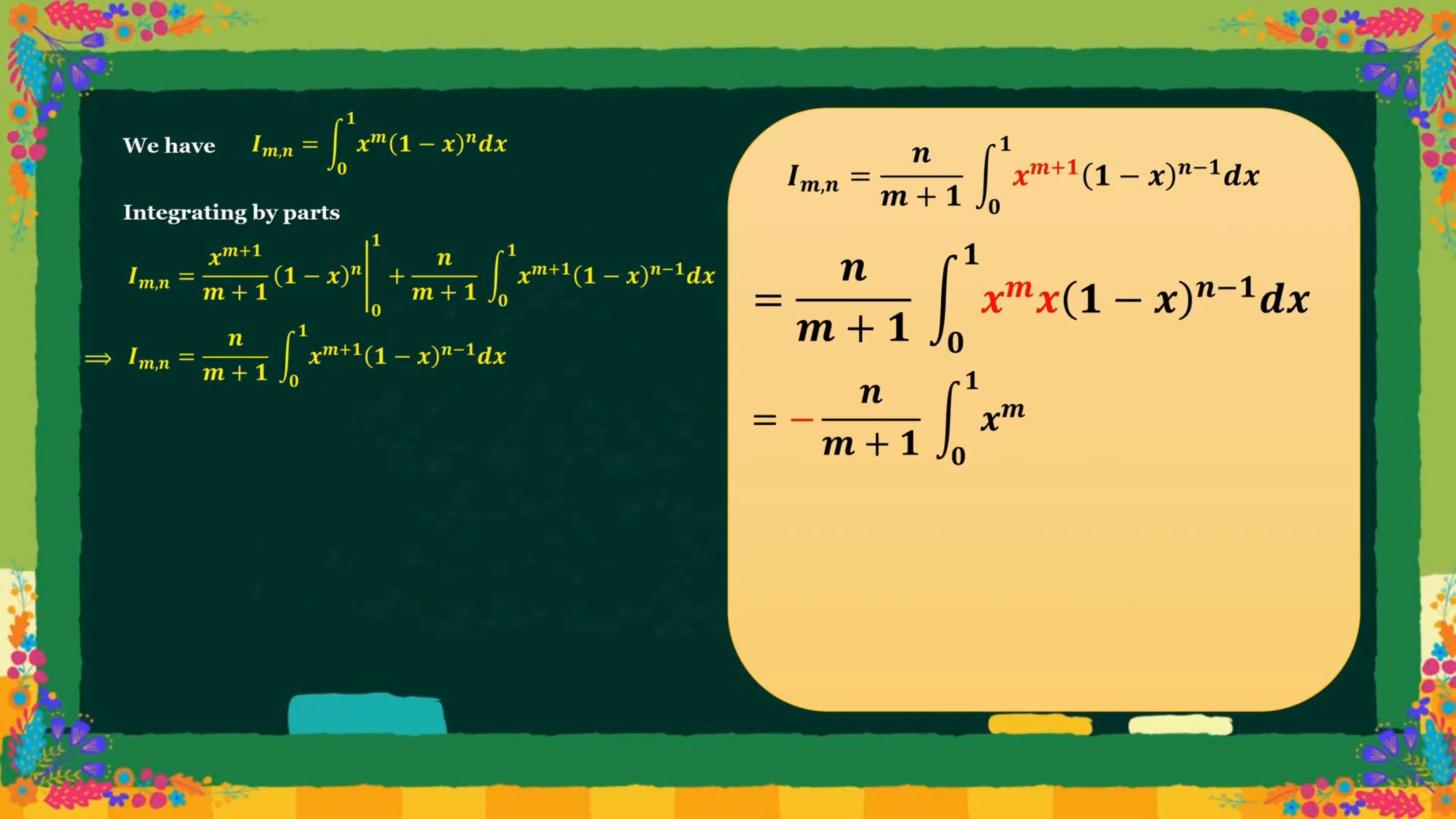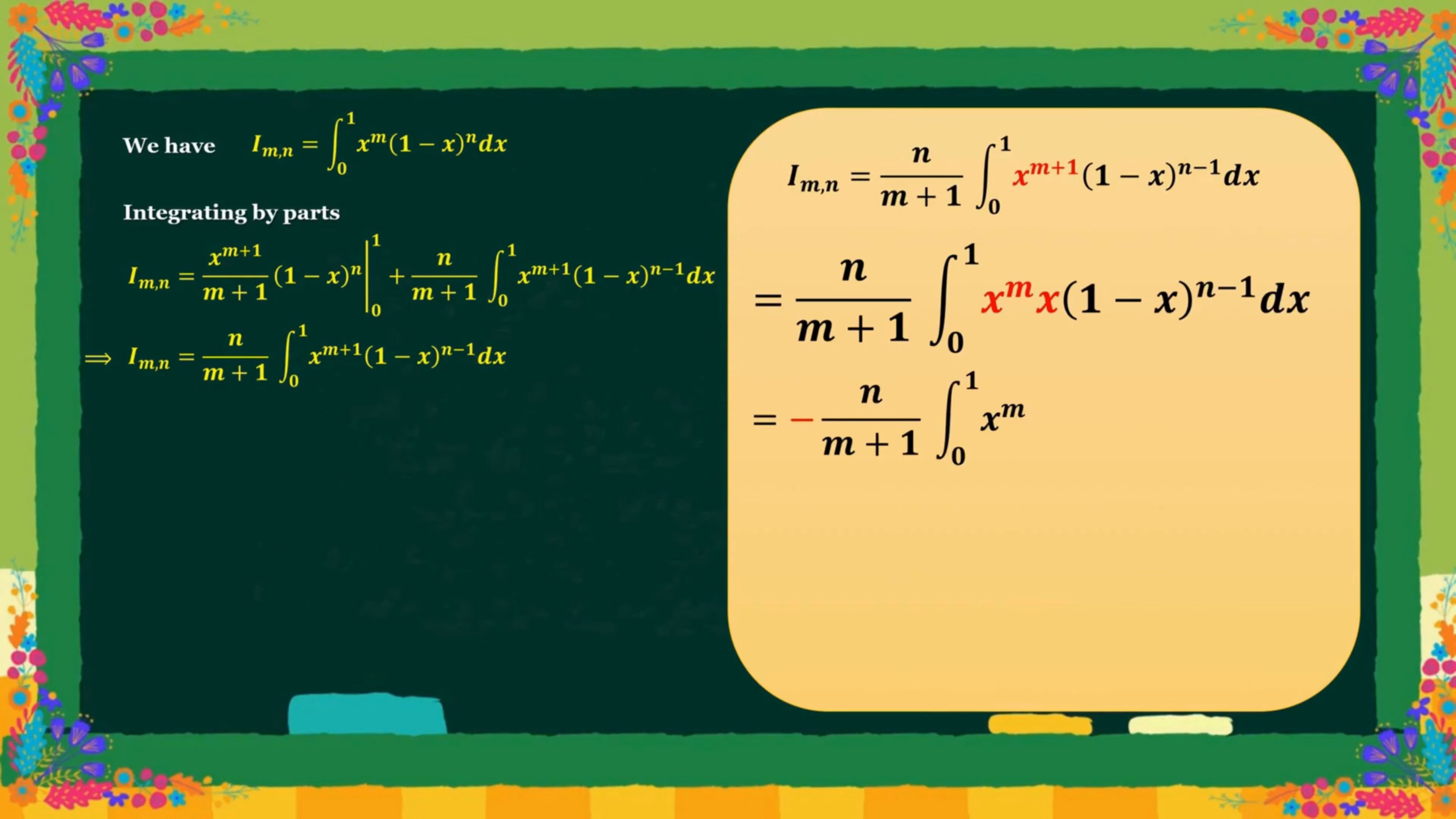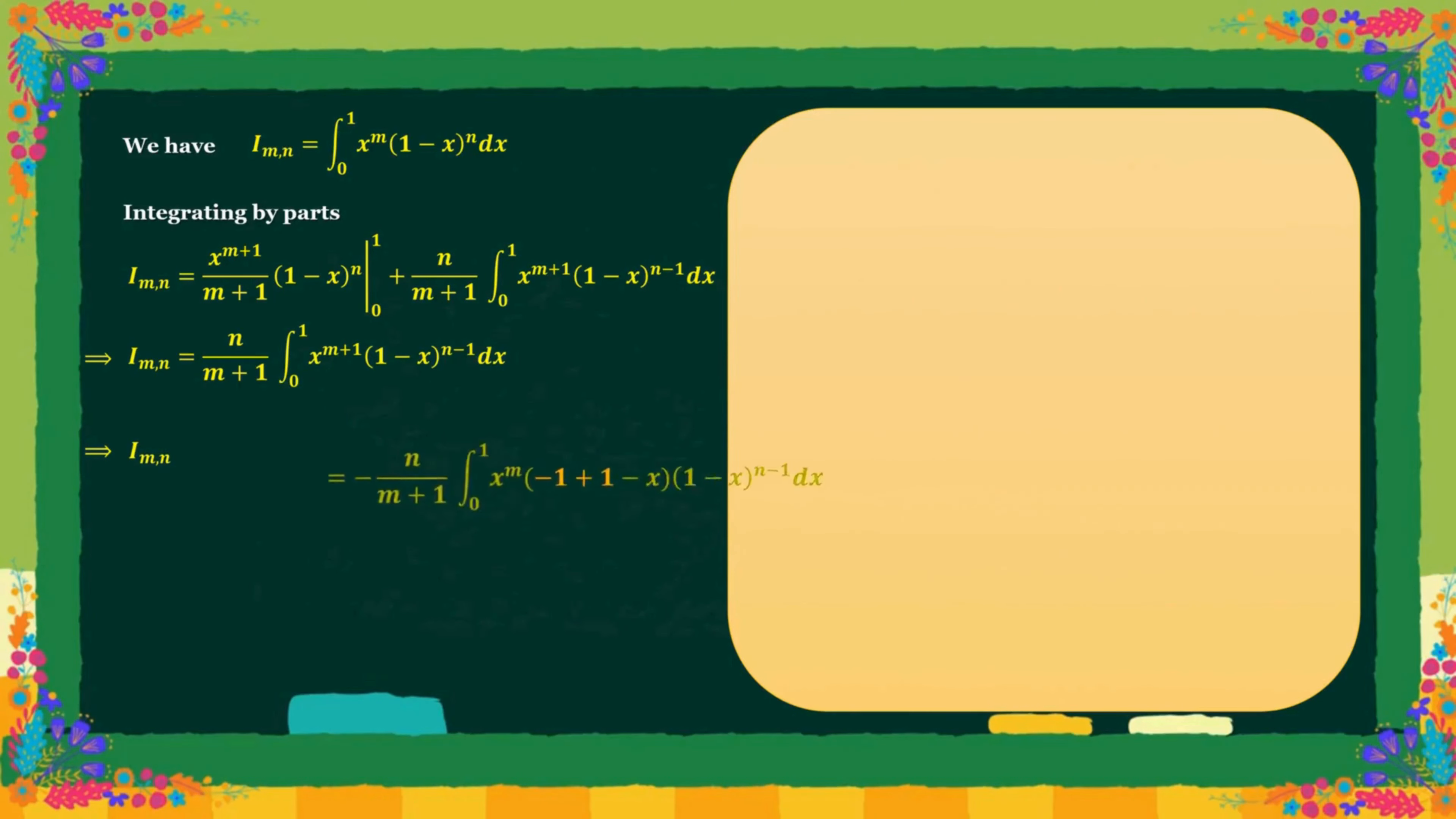Now we have to divide x to the power m plus 1 into two parts: x to the power m and x. After that in the last line, we include minus 1 and plus 1 in the brackets.